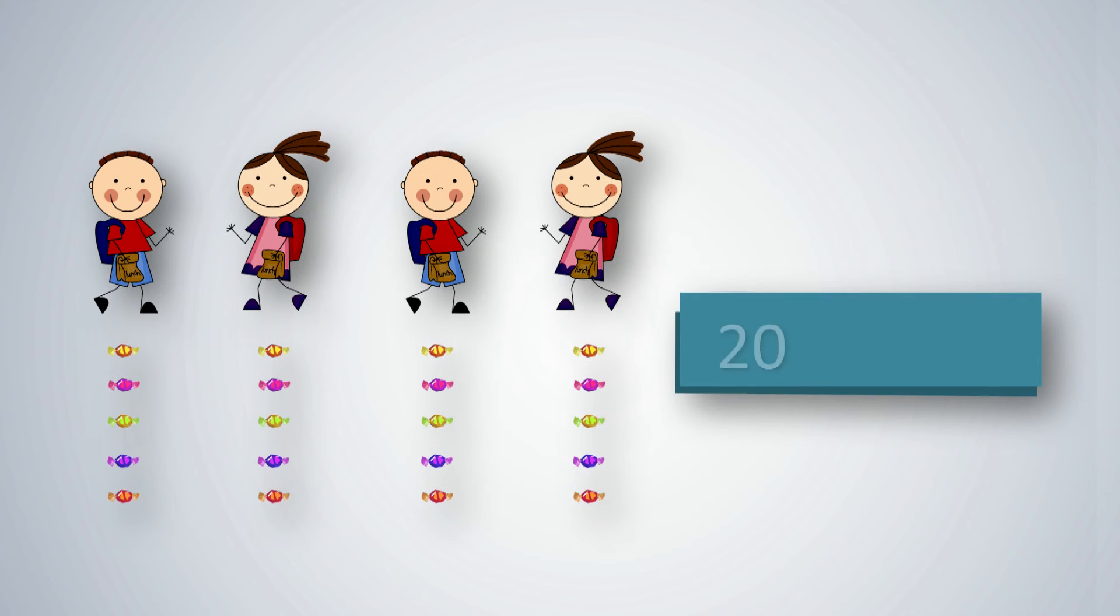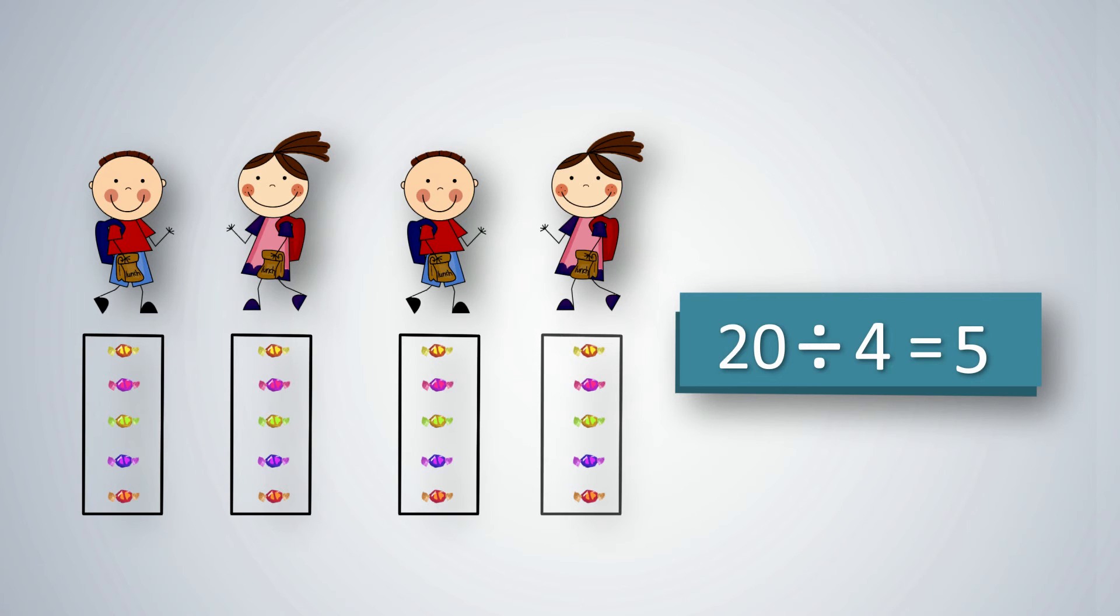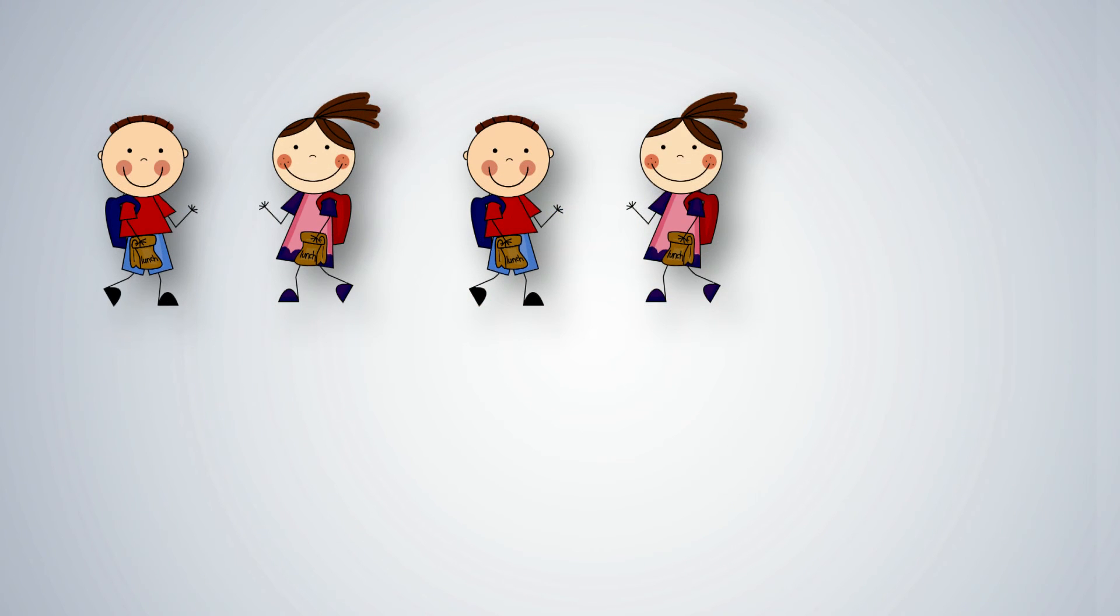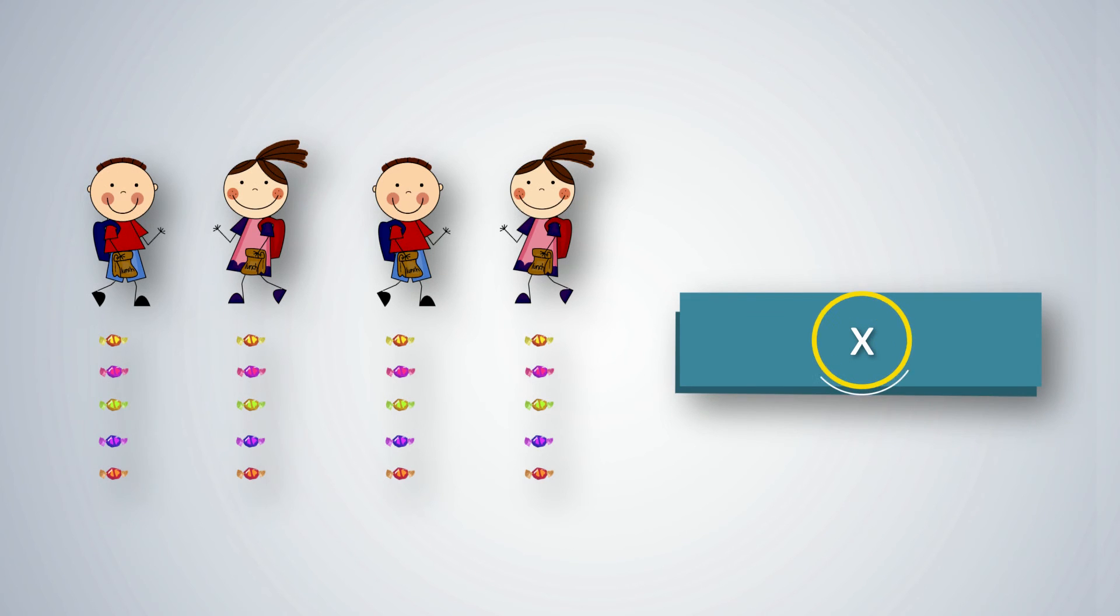When we divide 20 by 4, the quotient or answer is 5. Thus, each student gets 5 chocolates. On the other hand, if we start with the fact that we have 4 students and want to give 5 chocolates to each, how many chocolates in total will we require? We need to find the product or total and here apply the process of multiplication.